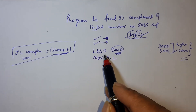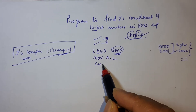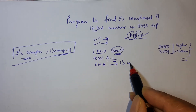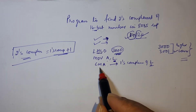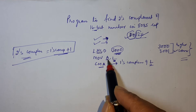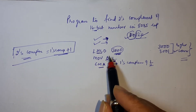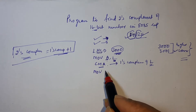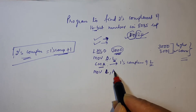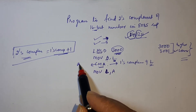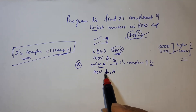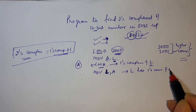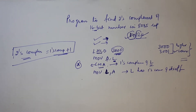Now MOV A, L — the lower byte is moved into the accumulator. Using CMA, we find the 1's complement of L. CMA works on the accumulator, so since the value of L is stored there, we are indirectly finding the 1's complement of L. Then MOV L, A stores the 1's complement back into L.